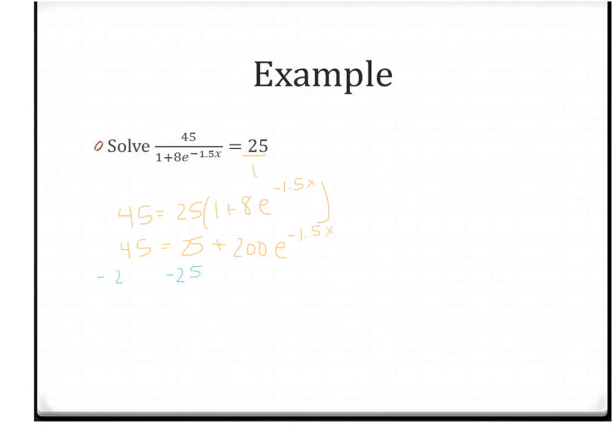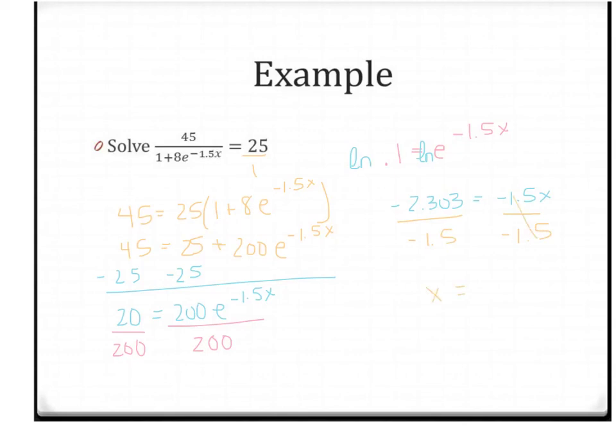Okay, then I would move the 25 to the other side. Remember, your goal is to get e by itself here. So that's 20 equals 200e to the negative 1.5x. And then you can divide by the 200 because it's not attached to the exponent. So 20 divided by 200 is 0.1, or a tenth, e to the negative 1.5x. And then to get rid of that e, you're going to take the natural log of both sides, because that's log base e. ln of 0.1 is negative 2.303 equals negative 1.5x. And just finish up by dividing by negative 1.5. And your final answer is x equals 1.535.